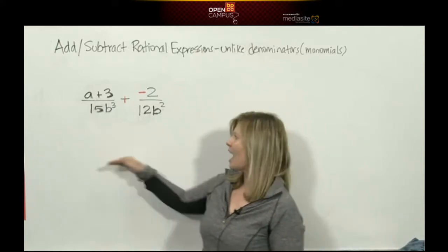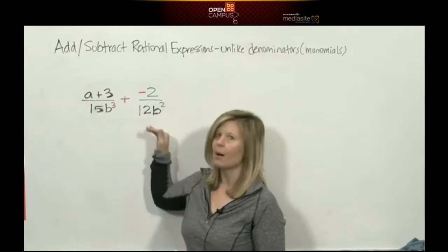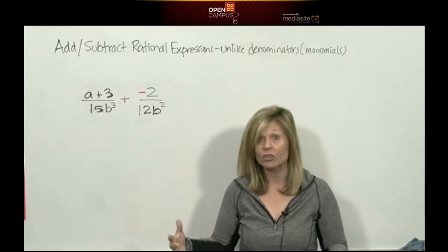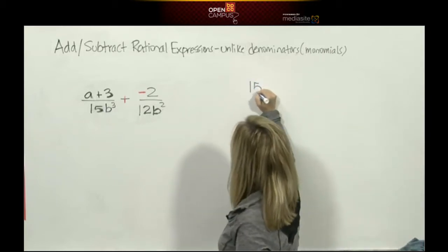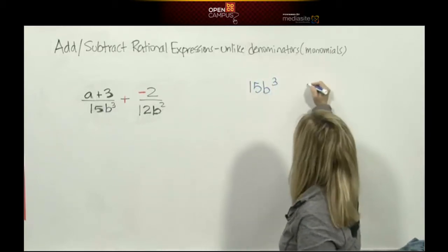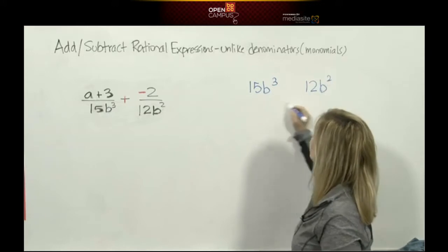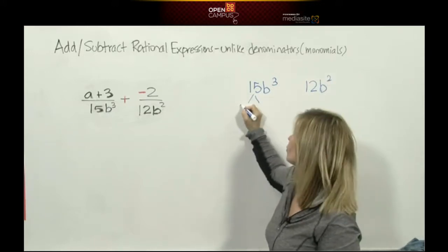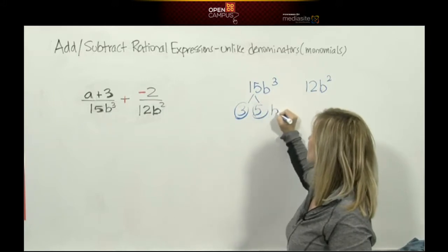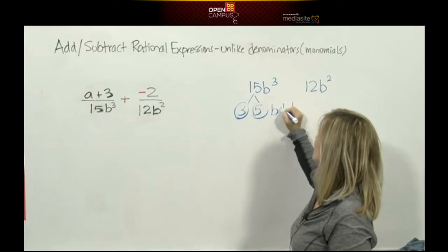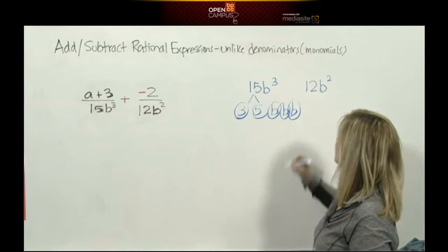If you cannot figure out what the common denominator is going to be, don't fret. Go to the side and do your factor trees. So let's take 15b cubed. 15 factors into 3 and 5. Those are prime numbers. b cubed factors to b times b times b.